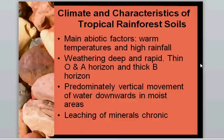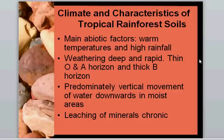Warm temperatures and high rainfall also mean the O and A horizons are quite thin. The O horizon is the undecomposed organic matter and the detrital layer, while the A horizon is the decomposing organic matter mixed with mineral soil. Both of these layers are very thin in tropical rainforest soils because decomposition proceeds at a very rapid rate. The organic matter never hangs around very long — it's broken down quickly and returned to inorganic or mineral forms very quickly.